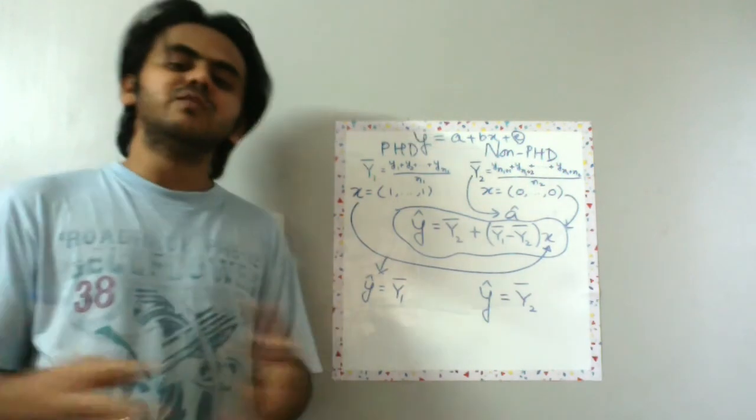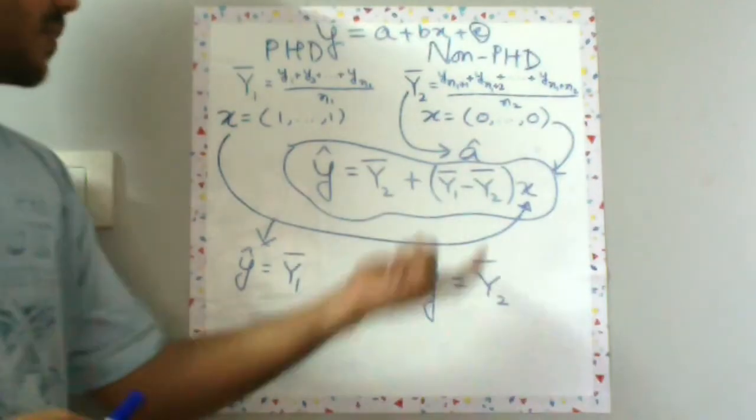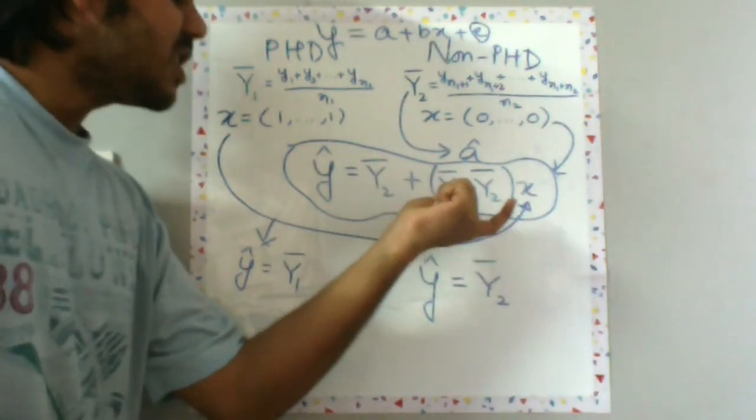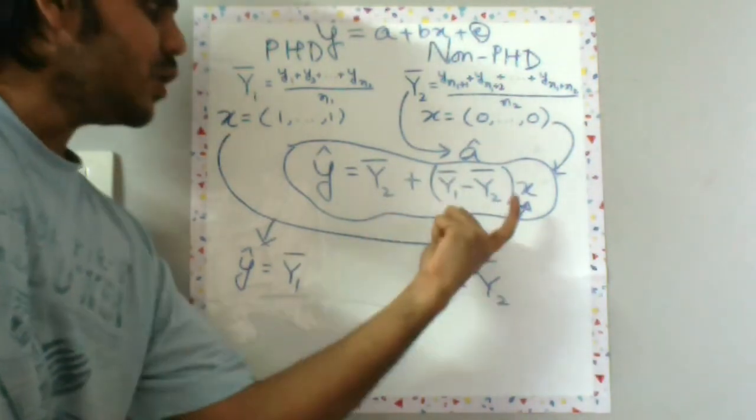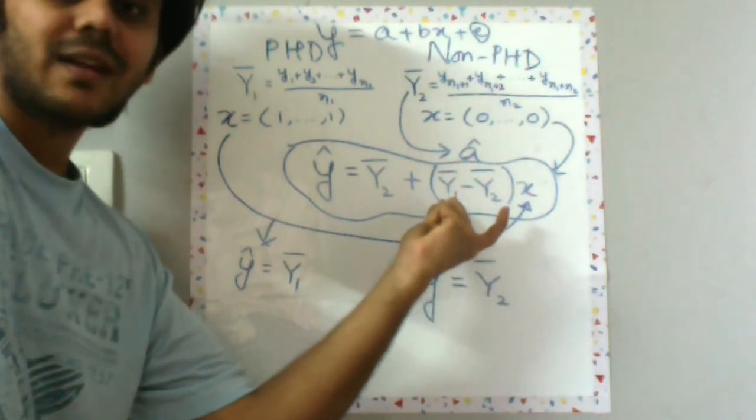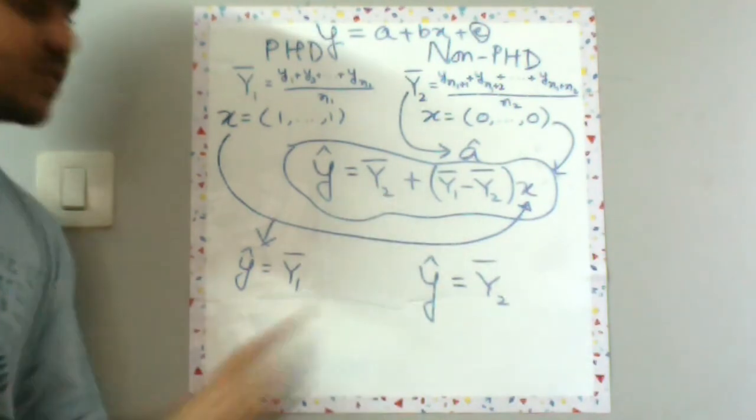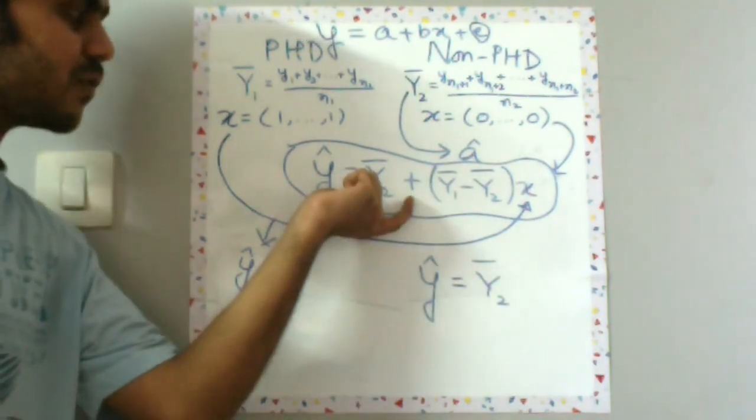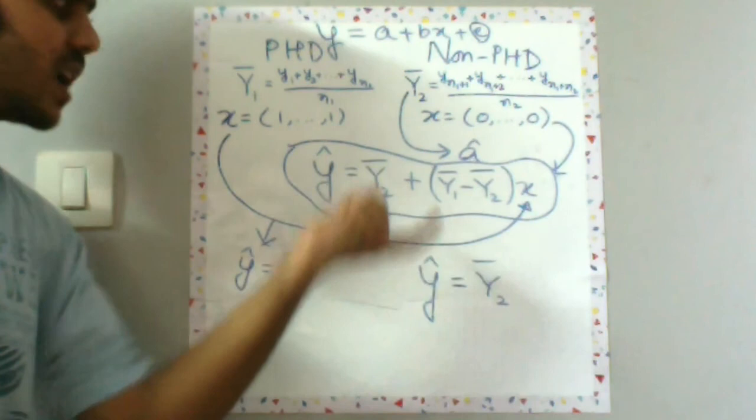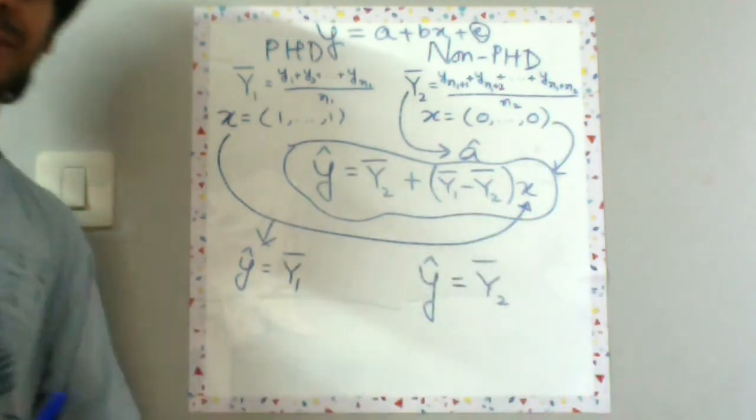Now you might not find this useful in this particular situation, but this kind of a framework would be very useful in subsequent models which we will be discussing. Another way to look at it would be that getting a PhD is giving you a benefit of Y1 bar minus Y2 bar in your salary of Y2 bar. So this is your baseline salary of non-PhD graduates, and if you do a PhD, you get this much of an increment.